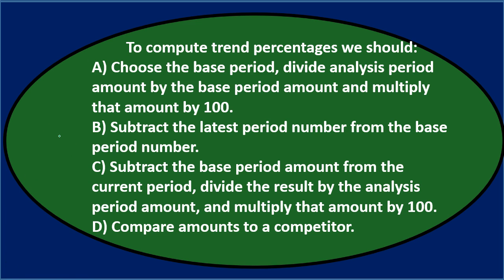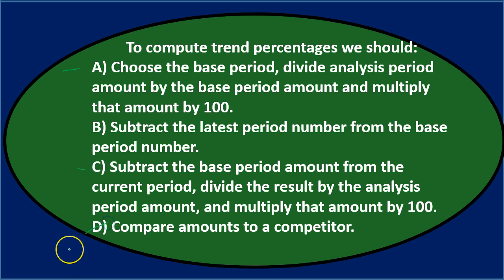Option B says subtract the latest period number from the base period — maybe I'll keep that for now. Option C says subtract the base period amount from the current period, then divide the result by the analysis period amount and multiply that amount by 100. Option D says compare amounts to a competitor — that doesn't seem to fit with the rest of these which are more complicated, so I don't think that's it.